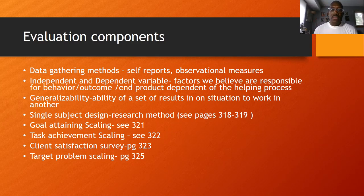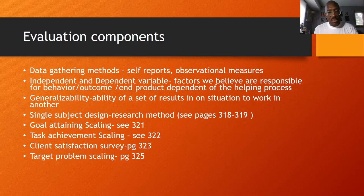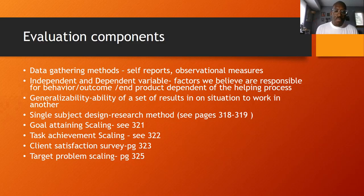We want to make sure that results can be generalized. If something works with a group of fourth graders, could it work with a group of fifth graders? If the characteristics are basically the same, we should be able to generalize the information as to whether things actually work. There are also different types of evaluation designs: single subject design, goal attainment scaling, task achievement scaling, client satisfaction survey, and target problem scaling. You can find more information about these in the corresponding pages of your text as it relates to the evaluation piece.